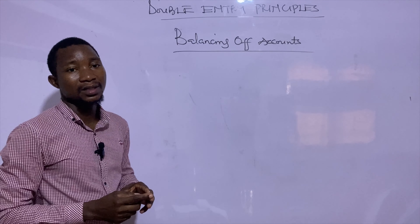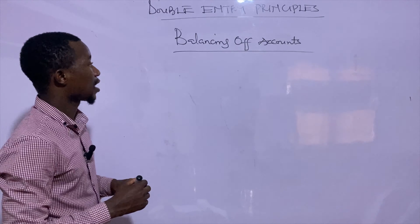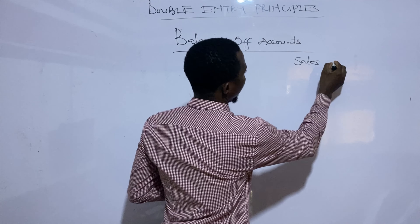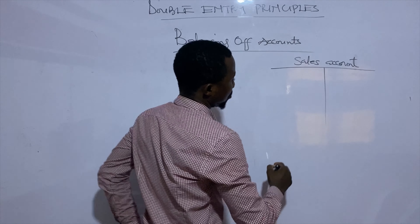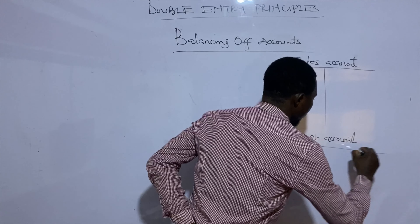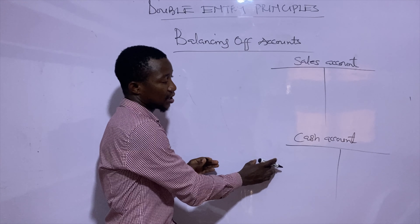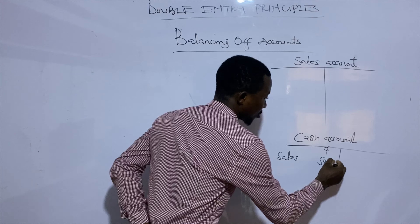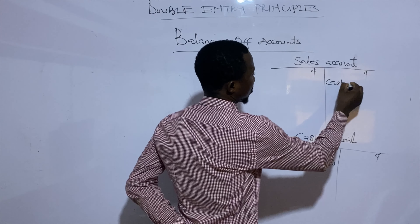Let's say there is a transaction that states cash sales of 5,000. There are two different accounts here: the sales account and the cash account. Because we made a sale and received cash, we debit cash in the name of sales — so the cash account shows sales for 5,000. We credit sales in the name of cash, the same 5,000.